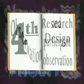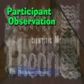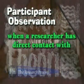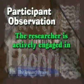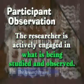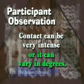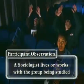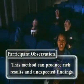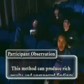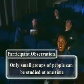The fourth type of research design is observation and participant observation. An example of observation is when a sociologist studies the group dynamics of a clique of teens without speaking or interacting with them in any way — the researcher tries to be as unobtrusive as possible. Participant observation is when a researcher has direct contact with the activities being studied, actively engaged in what is being studied. This contact can be very intense or vary in degrees. In participant observation, a sociologist lives or works with the group being studied, which can produce rich results and unexpected findings. However, only a relatively small group can be studied at one time.